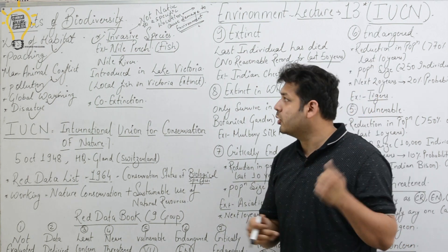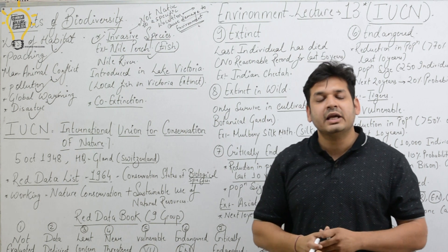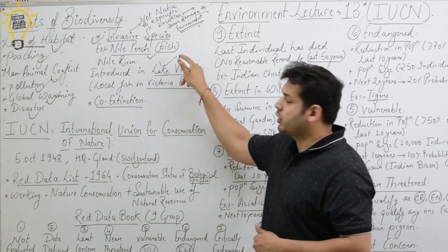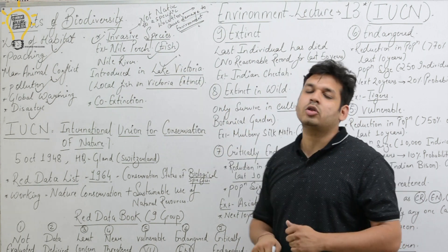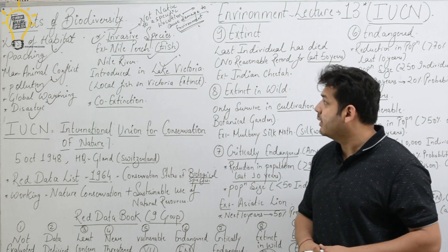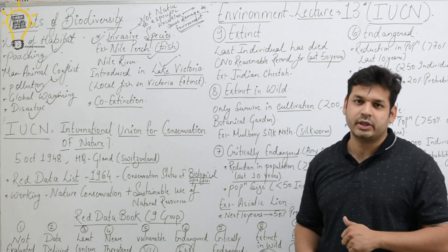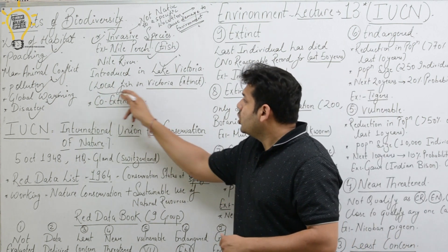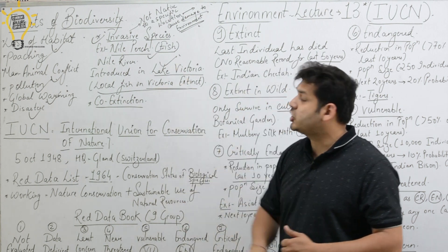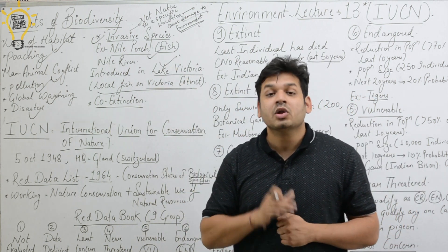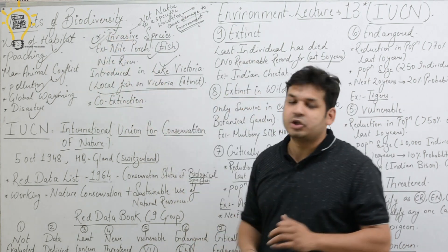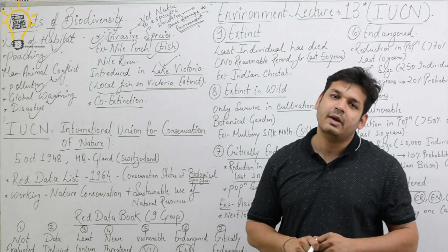Let me give you an example. There is a fish called the Nile perch, which was found in the Nile River. It was introduced into Lake Victoria — you can tell me which continent Lake Victoria is in. When the Nile perch was introduced into Lake Victoria, the local fish went extinct. The Nile perch killed the local fish. So you can see how biodiversity was harmed, and how invasive species is a reason for the threat to biodiversity.